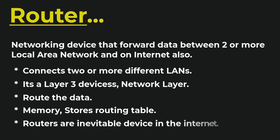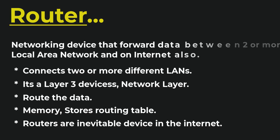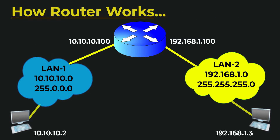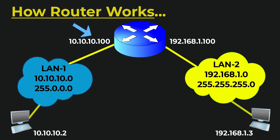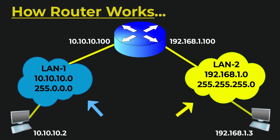Routers are an indispensable device on the internet — without a router we can't connect to the internet. Now we will see how a router works. This is an example of a simple network. The router has two interfaces: interface one connects to one local area network, and interface two connects to another local area network. The IP address of each interface is the default gateway for all PCs and end devices in its respective local area network.